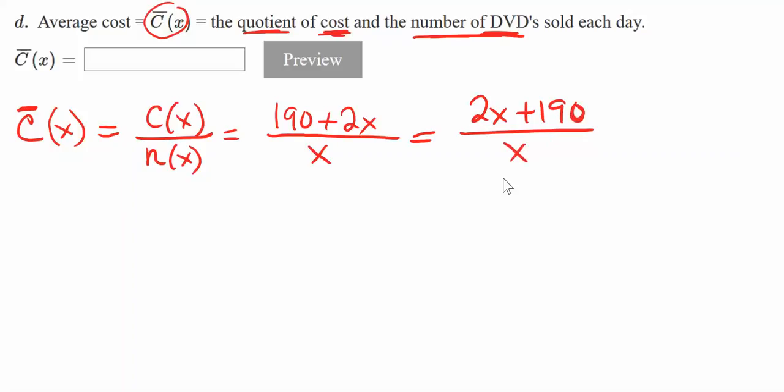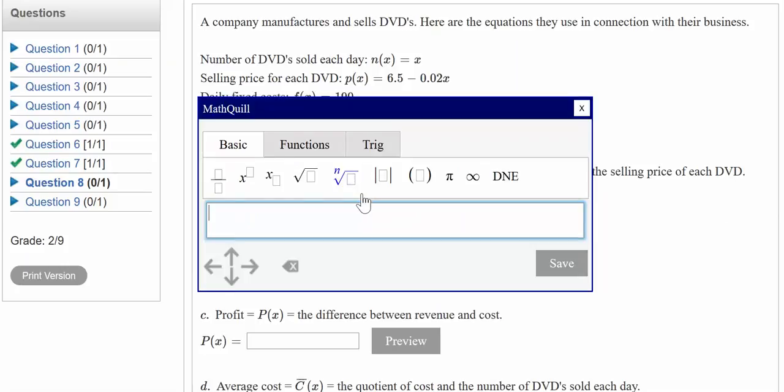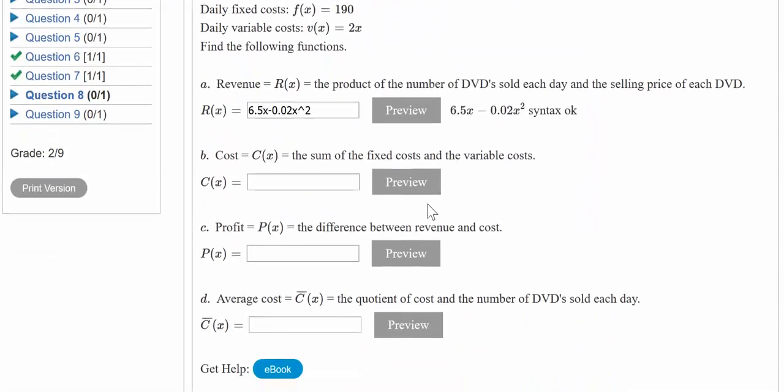Now we're back to the original page. Let's plug stuff in. The revenue function R(x) was 6.5x minus 0.02x to the second power. We'll save that and preview to make sure it looks correct.